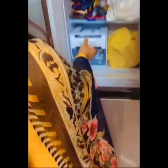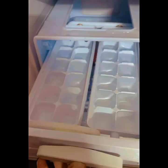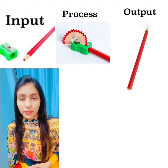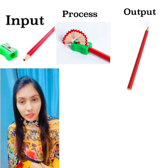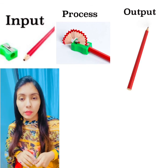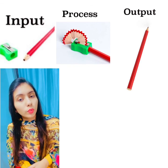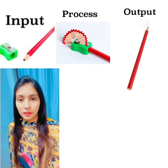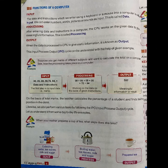Let us learn the IPO cycle with a small example. Take a pencil and a sharpener — they are the input. We will sharpen the pencil with the sharpener, which is the process. The output will be the sharpened pencil.